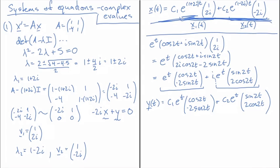The real general solution is therefore y(t) = c1·e^t·[cos 2t; -sin 2t] plus c2·e^t·[sin 2t; 2 cos 2t]. We obtained this by taking the complex general solution, isolating one complex solution x1(t), and using its real and imaginary parts as the two independent real solutions — justified by the fact that for a complex solution, both its real and imaginary parts are themselves solutions.